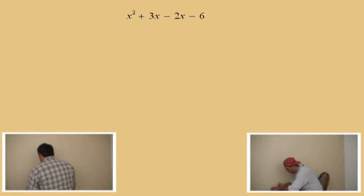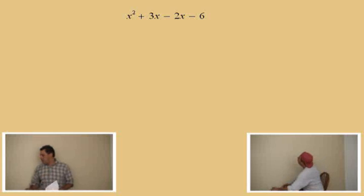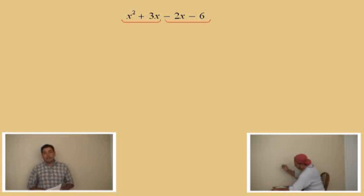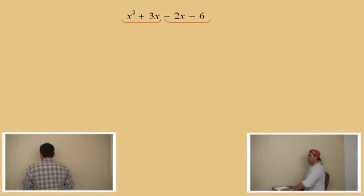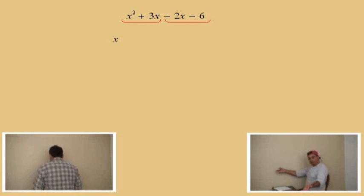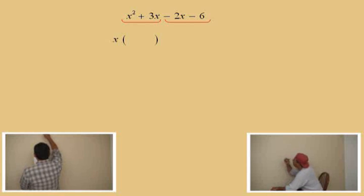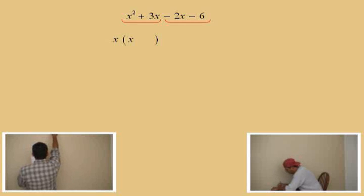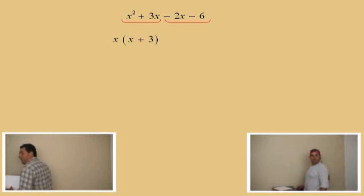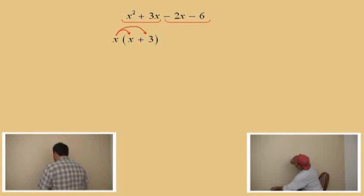Let's list our first problem: x squared plus 3x subtract 2x subtract 6. Factoring by grouping requires that you form two groups, so we'll go ahead and form two groups. Now, we need to take the greatest common factor out of each group. Charlie, what's the greatest common factor for that first group? It's an x — very good. We bring down our x and open a parenthesis. What do I multiply the x by to get x squared? X. And what do I multiply the x by to get plus 3x? Plus 3. So x times x gives x squared, and x times 3 gives 3x.